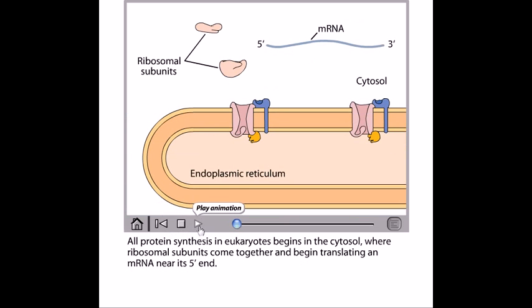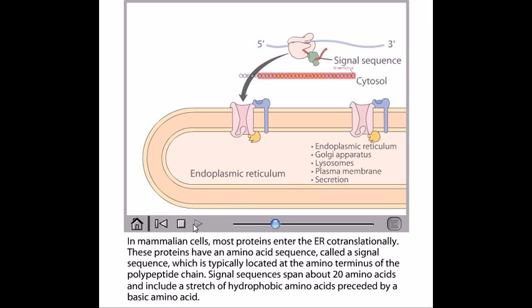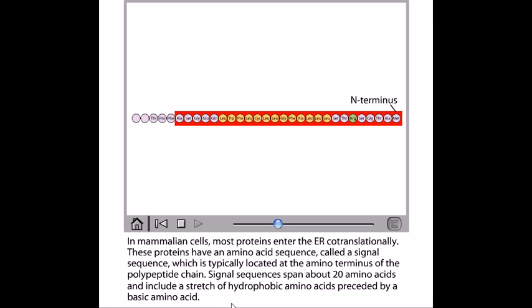Now if I go back again, let me come here and tell you about the signal sequence first. Now the signal sequence spans about 20 amino acids and includes a stretch of hydrophobic amino acids preceded by a basic amino acid. Here is the stretch of hydrophobic amino acid and the presence of a basic amino acid.